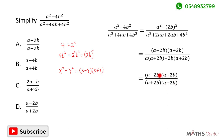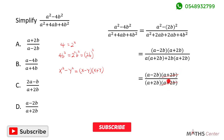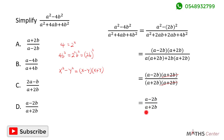We have now factorized both the numerator and the denominator. We can see that (a plus 2b) on the numerator cancels with (a plus 2b) on the denominator because they are common factors. When we do that, we are left with (a minus 2b) on the numerator and (a plus 2b) on the denominator. So the simplified expression is a minus 2b divided by a plus 2b. Looking through the options, the correct answer is option D: a minus 2b divided by a plus 2b.